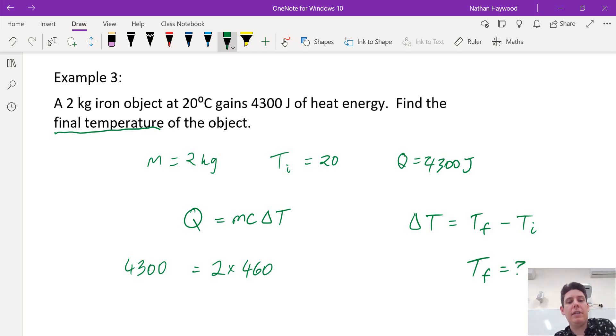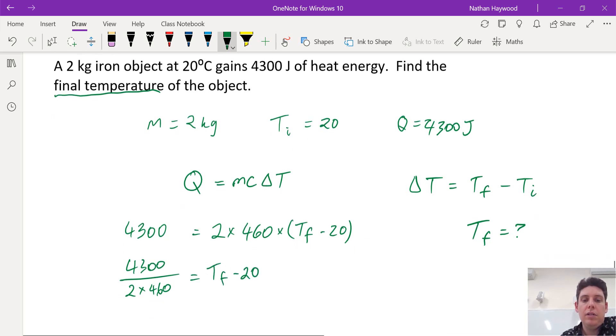That's the specific heat capacity. And now we have a change in temperature, which is Tf minus the initial. So we're going to have to rearrange for Tf. So first of all, divide by these two numbers.